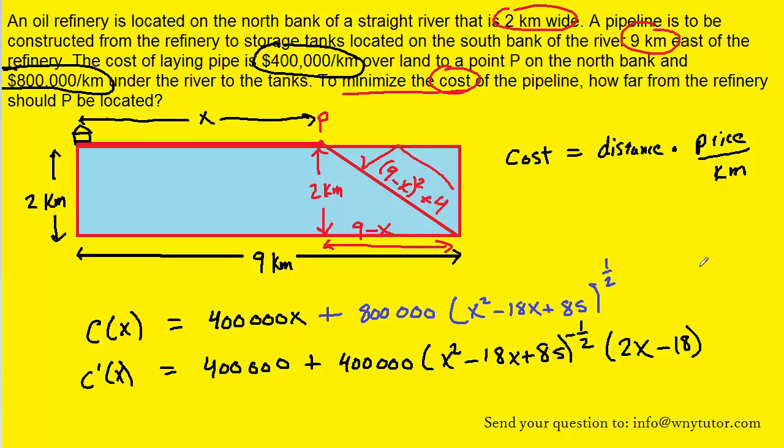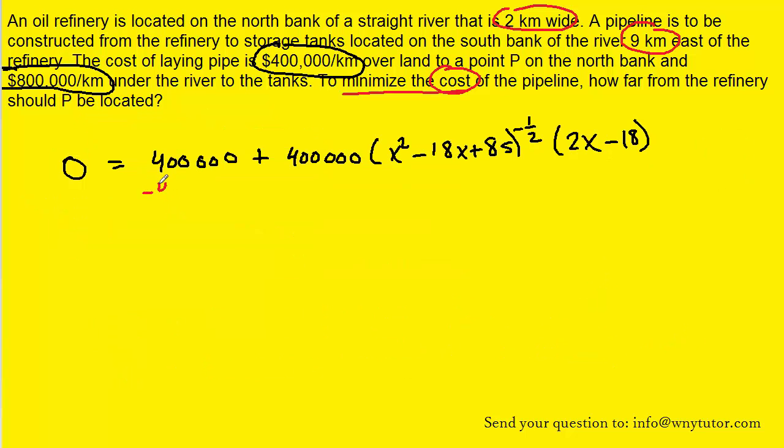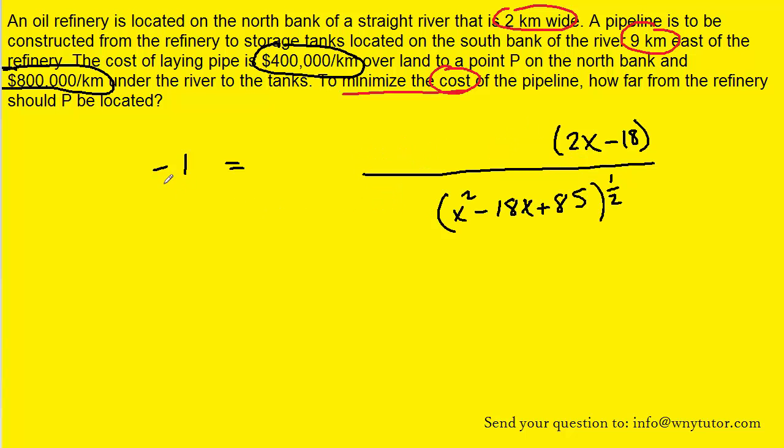After calculating the derivative, we have to set it equal to zero. And then, of course, the challenge is to solve for x. So let's clear some room and do that. Let's subtract 400,000 from both sides. And then we can actually divide both sides by 400,000. Maybe one way to proceed next would be to change this negative 1 half to a positive 1 half. In order to do that, we need to move this large term in parentheses to the denominator. Remembering that there's also a 1 here, we can actually cross multiply.